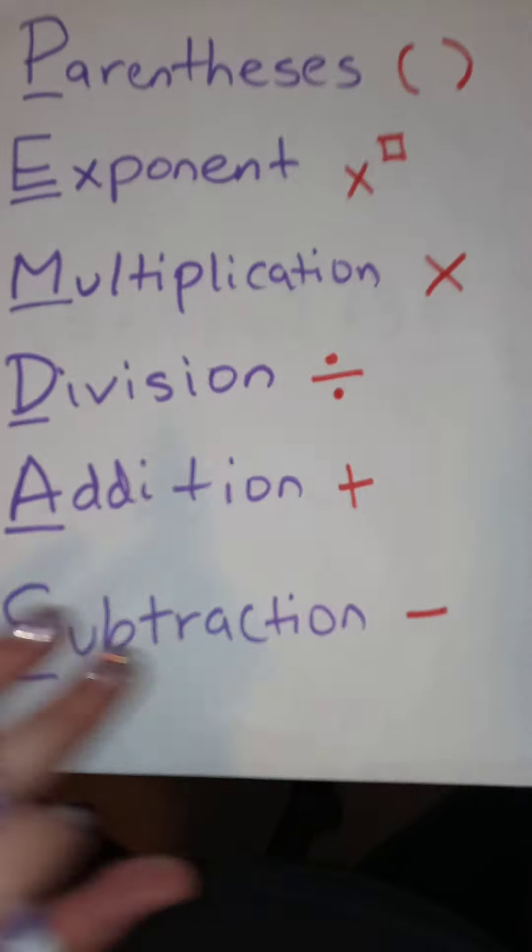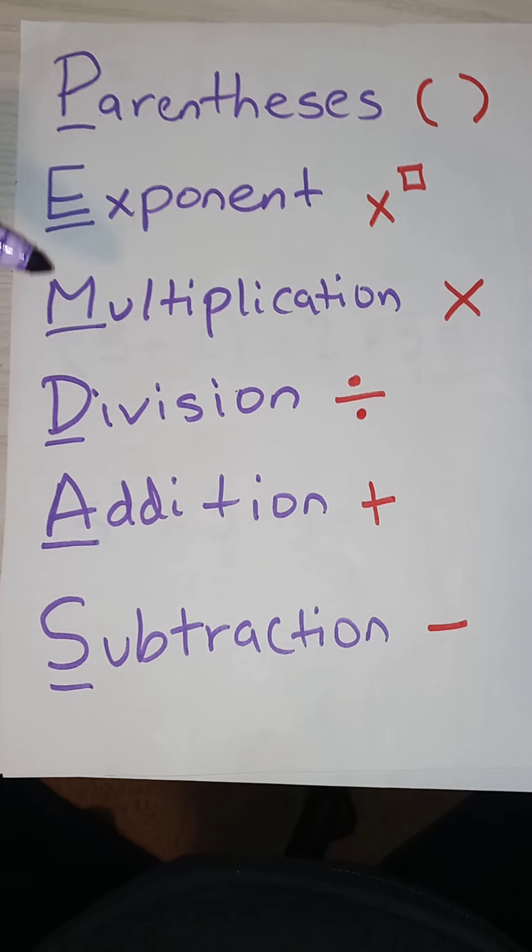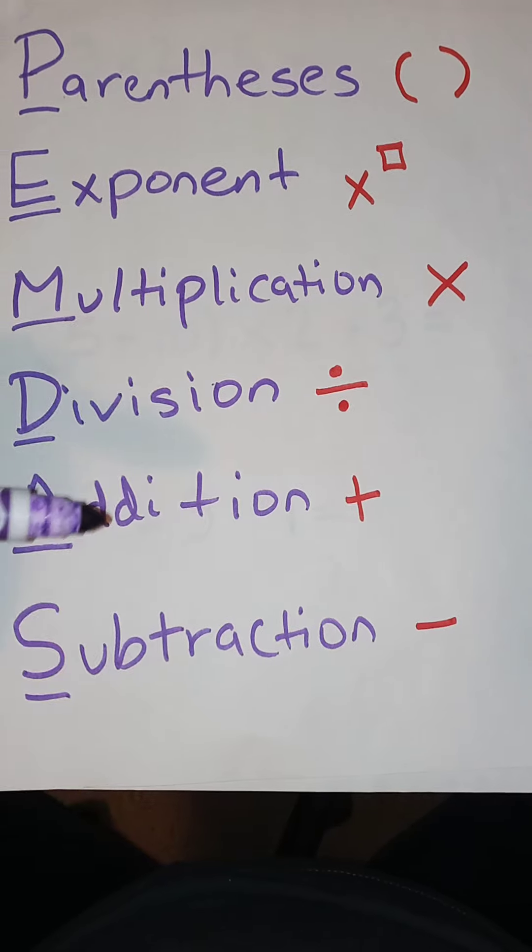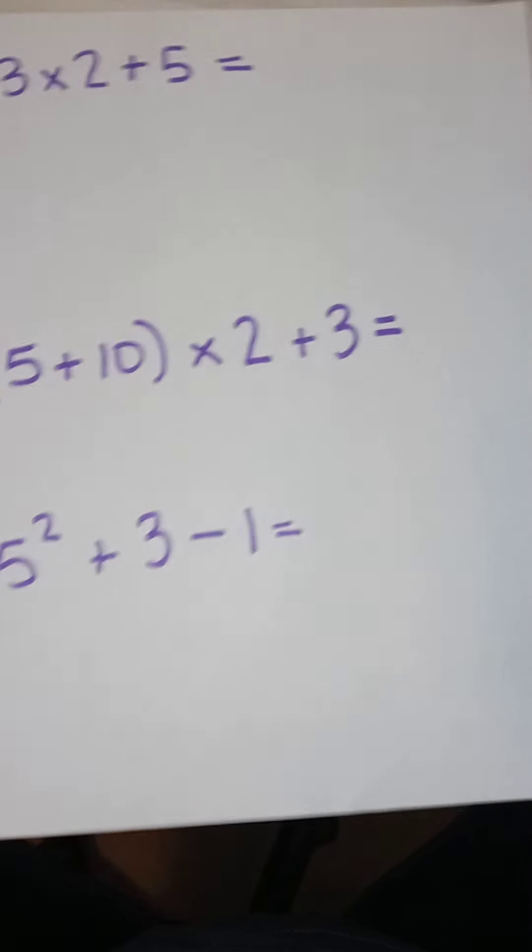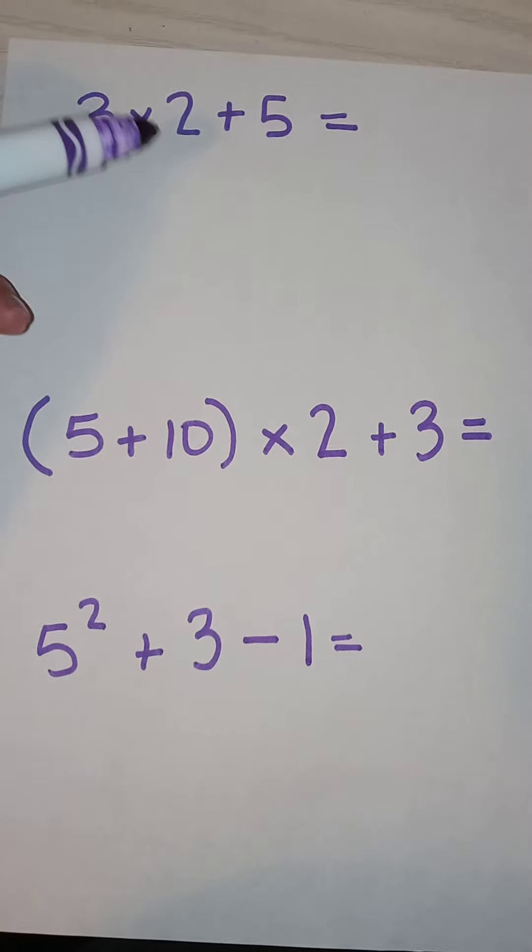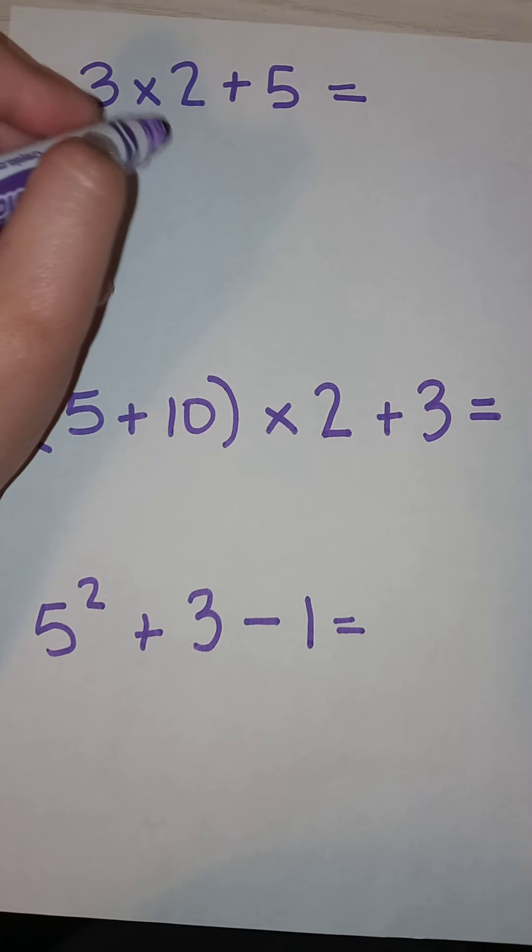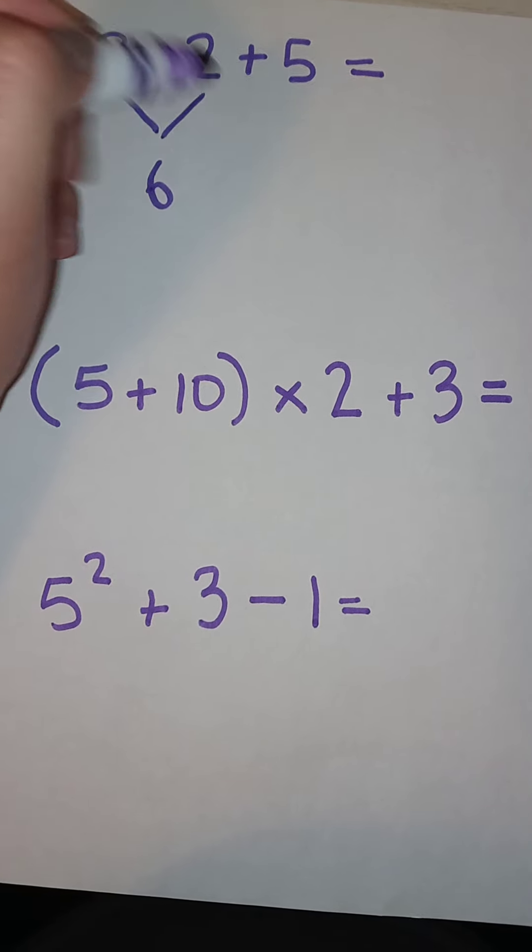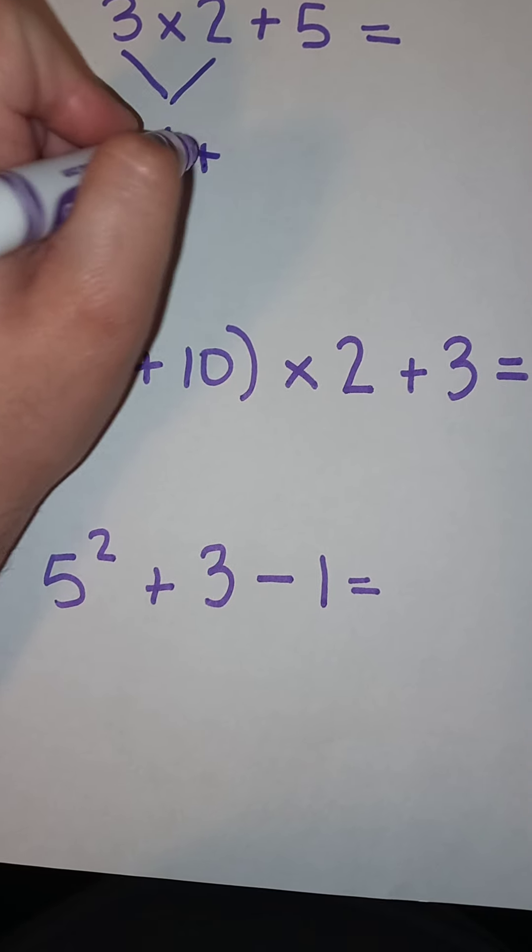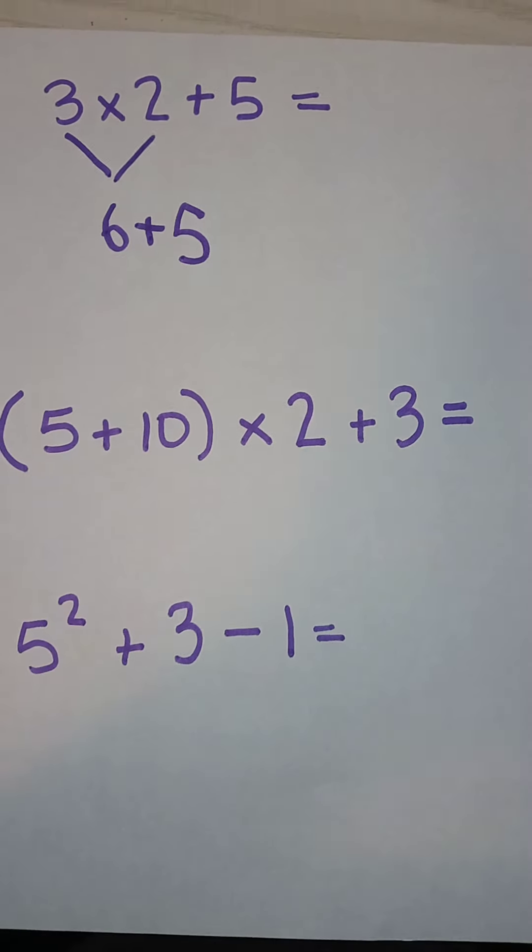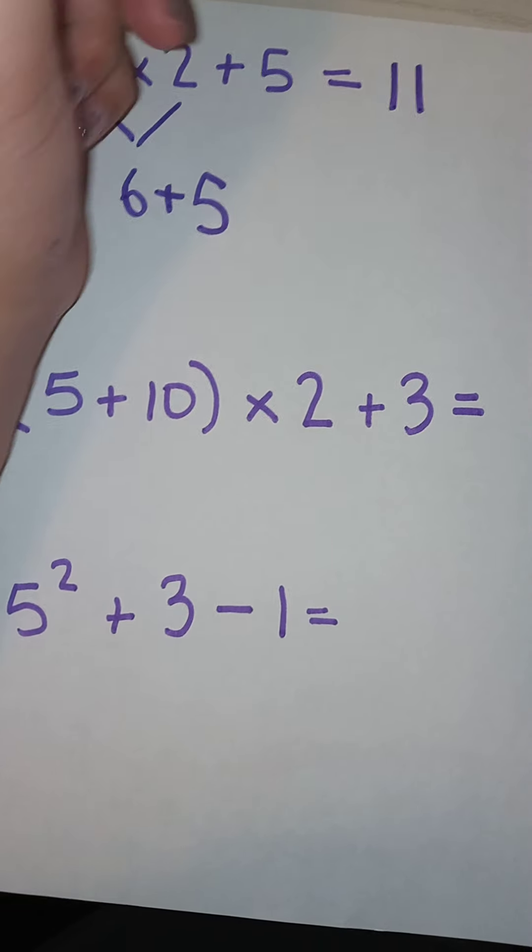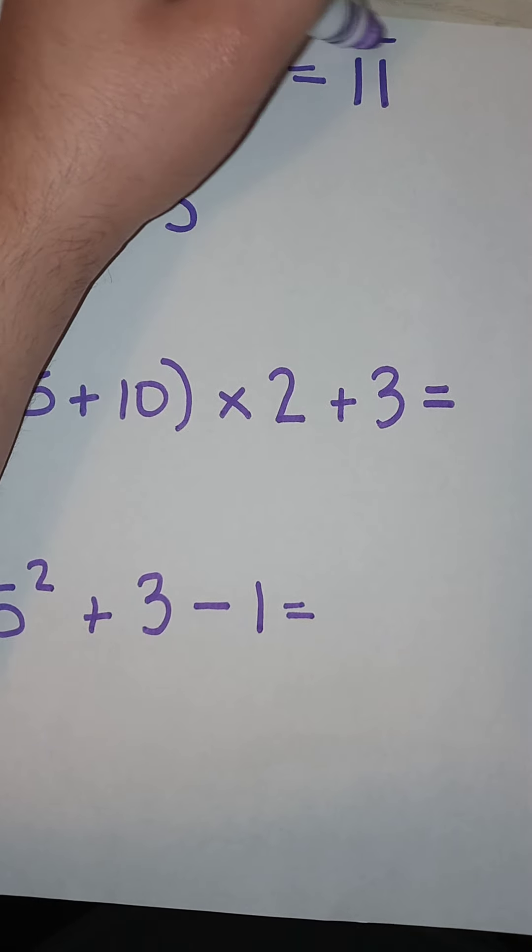PEMDAS. As you can see, multiplication comes first. And then, addition. So, we will do three times two is six. Bring this down and you'll have plus five. And your answer will be eleven. That is the answer for number one.